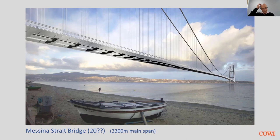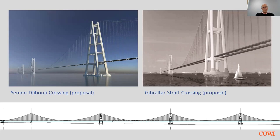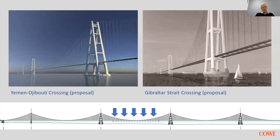Suspension bridges are getting longer, and we're now looking at multiple span structures. If you've got a very long crossing, you need to break it down into manageable lengths. The reason for an A-shaped structure is that when you have a patch load along the deck and load one span in a multiple-span situation where the adjacent tower tops are not anchored back to the ground, those towers try to move inward. You need to triangulate — do something to stiffen that system. This is where suspension bridges begin to struggle with multiple spans.